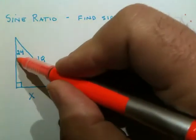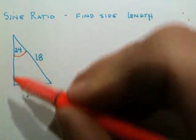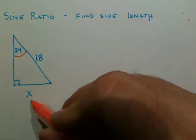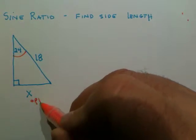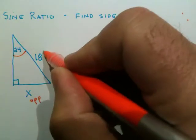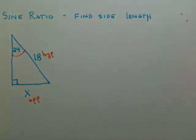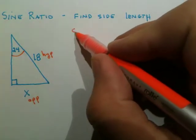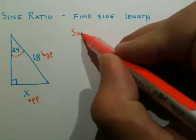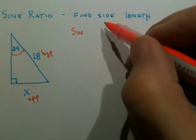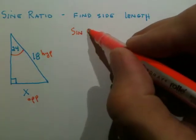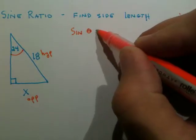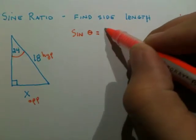With respect to the 24 degree angle, X is the opposite side and 18 is the hypotenuse because it's across from the right angle. The definition of sine, abbreviated SIN: sine of some angle theta equals the length of the opposite side over the length of the hypotenuse.